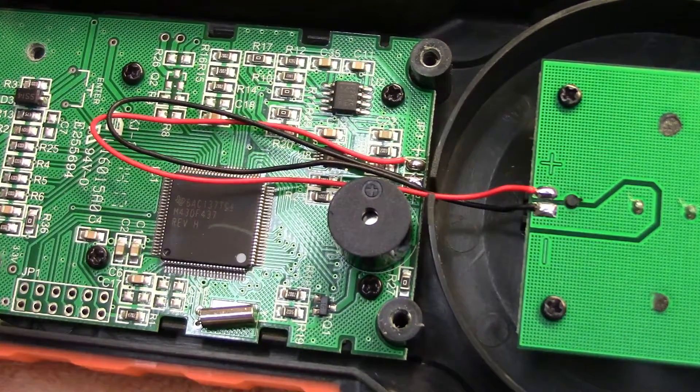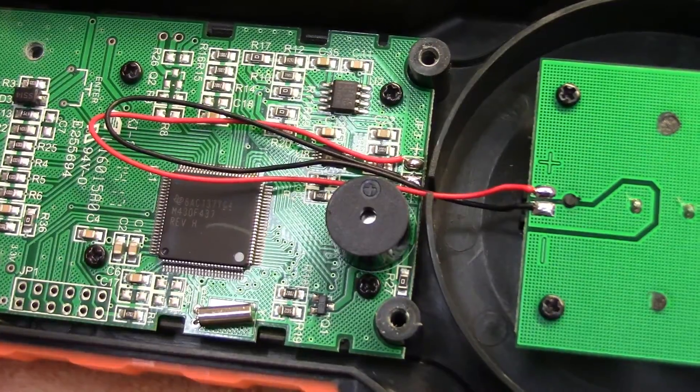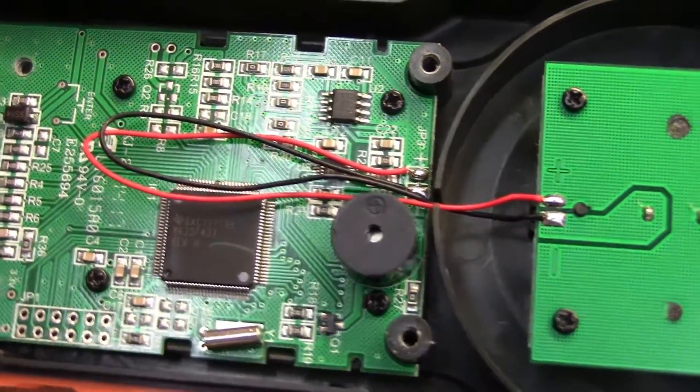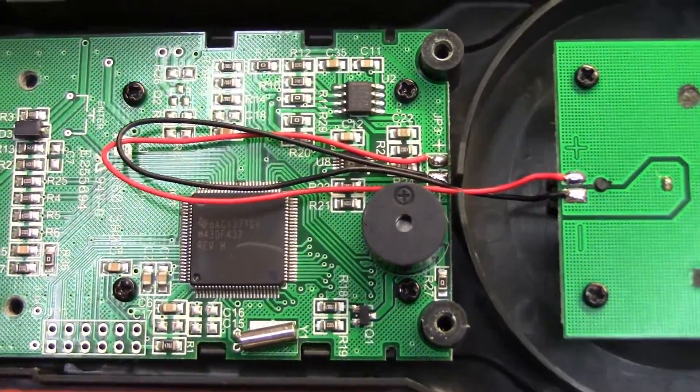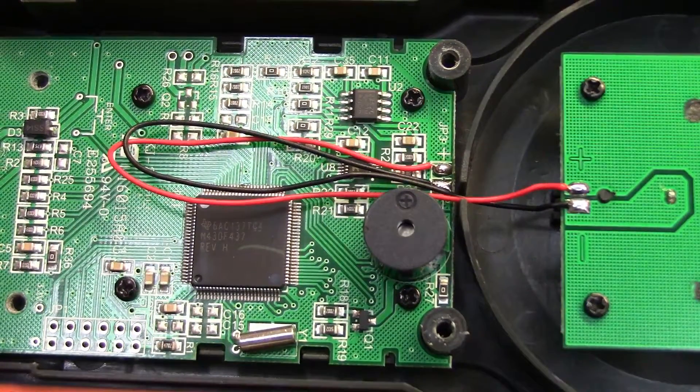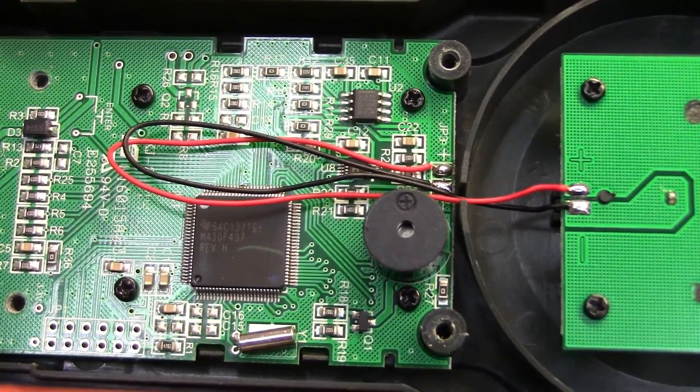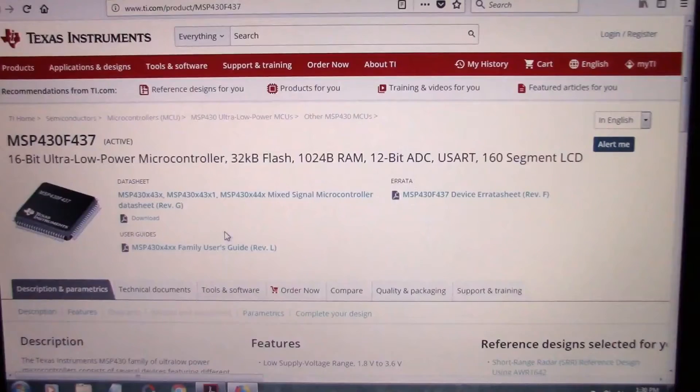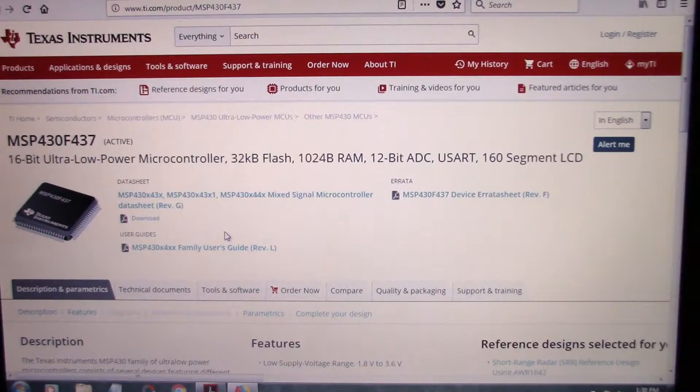Oh geez, it's a Texas Instruments. Didn't expect that, didn't expect a brand name. What is this? An M430 F437. That's actually a good little microcontroller. Let's look that up online here, I'm kind of curious what that is.